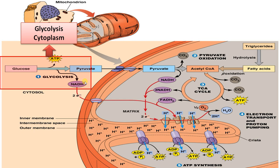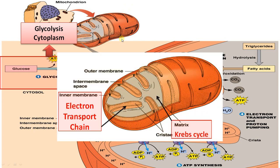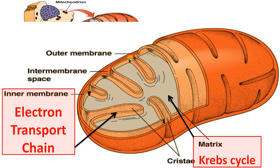The next two steps — Krebs cycle and electron transport chain — occur inside the mitochondria. Let us zoom in. Mitochondria is a double membrane-bound organelle with an outer membrane and an inner membrane that is folded inward toward the matrix. It is called the powerhouse of the cell, as the majority of ATP is synthesized inside mitochondria.